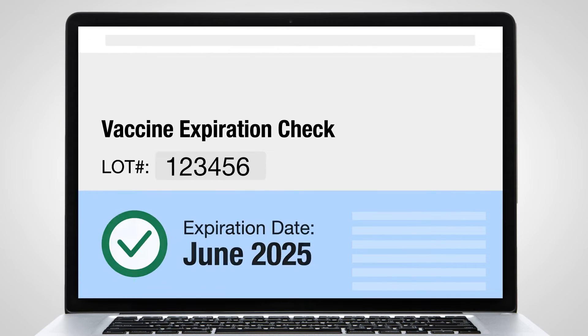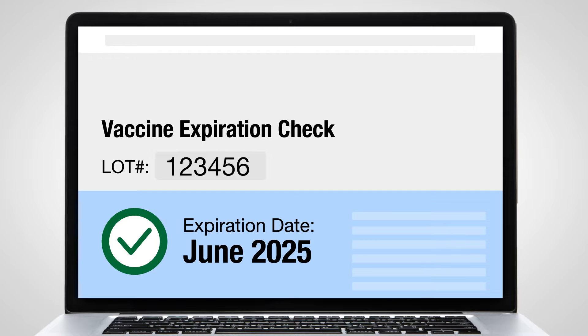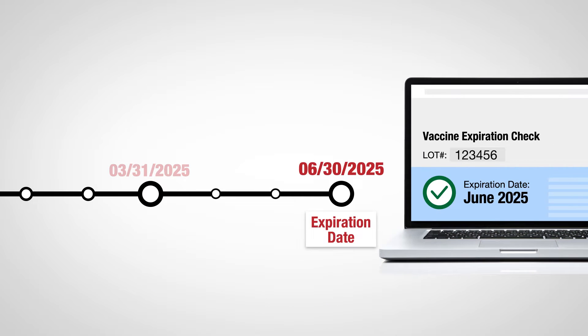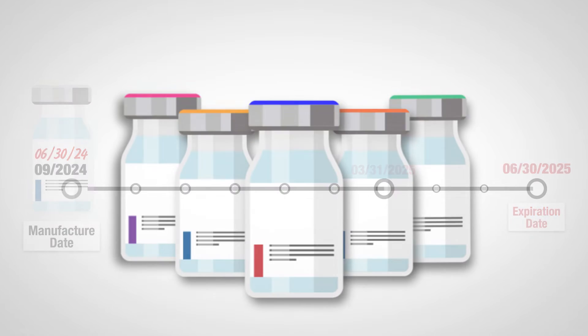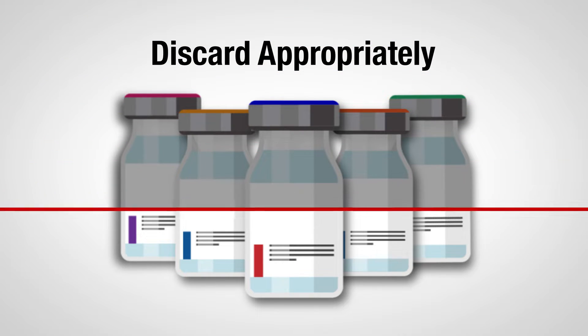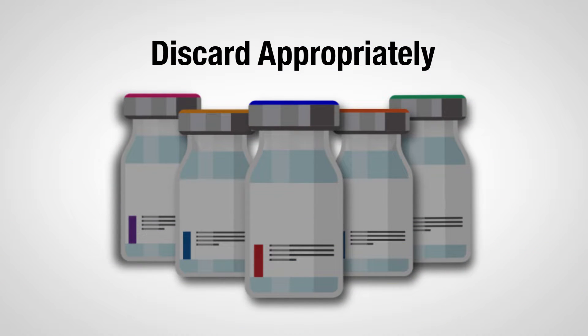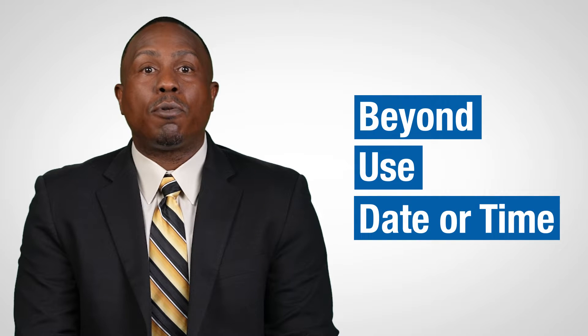Occasionally, an expiration date may change, such as when the FDA grants an extension. In these cases, the expiration date would be lengthened. Inappropriate vaccine handling and storage conditions can shorten the expiration date or even require vaccines to no longer be used. Follow your facility's standard operating procedures or contact the manufacturer for guidance when inappropriate storage conditions have occurred. While all vaccines have an expiration date, some vaccines also have a beyond-use date or time, or BUD.